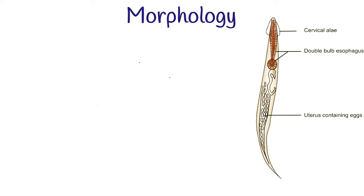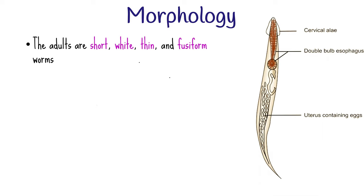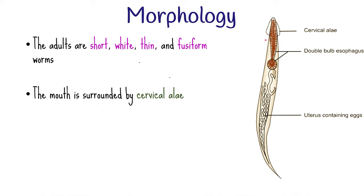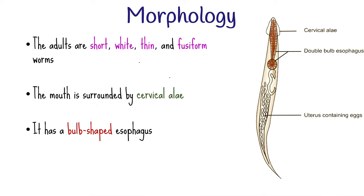We'll briefly look at the morphology of the adult worm, both male and female, and the eggs. The adults are short, white, thin, and fusiform worms — fusiform meaning a spindle-like shape that is wide in the middle and tapers at both ends. The mouth is surrounded by three wing-like cuticular expansions known as cervical alae, and they are transversely striated. It has a bulb-shaped esophagus with a double-bulb structure — a unique feature of pinworms — formed by the posterior end of the esophagus dilated to form a globular bulb.